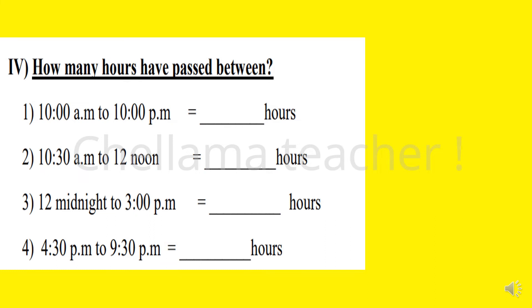Question number 4: How many hours have passed between? Question number 1: 10 AM to 10 PM. Let's see the clock. 10 AM to 10 PM means the hour hand starts from 10 o'clock and completes one full round and reaches the place again at 10 o'clock. That means 12 hours.